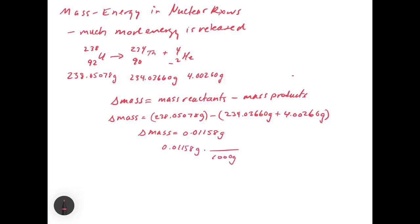We have to divide this by 1,000 grams for every 1 kilogram, and with that, we're going to get 1.158 times 10 to the minus 5 kilograms.